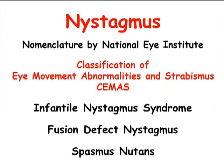There is a nomenclature by the National Eye Institute called CMAS. This is the classification of eye movement abnormalities and strabismus, and it denotes three different types of nystagmus.